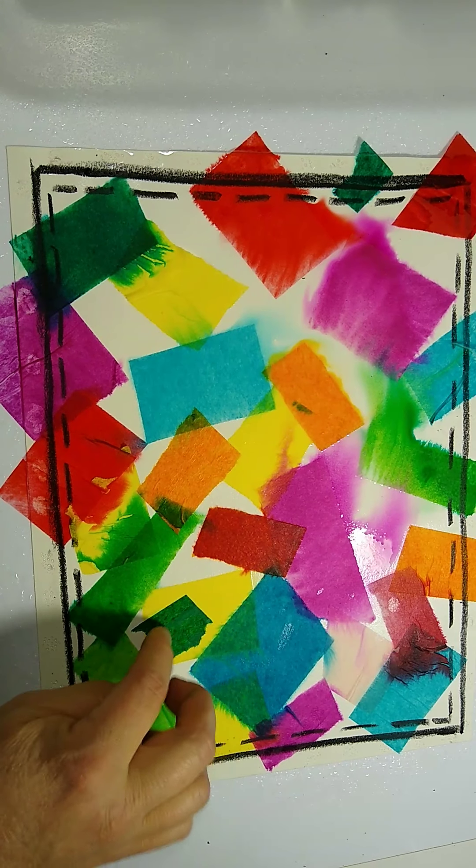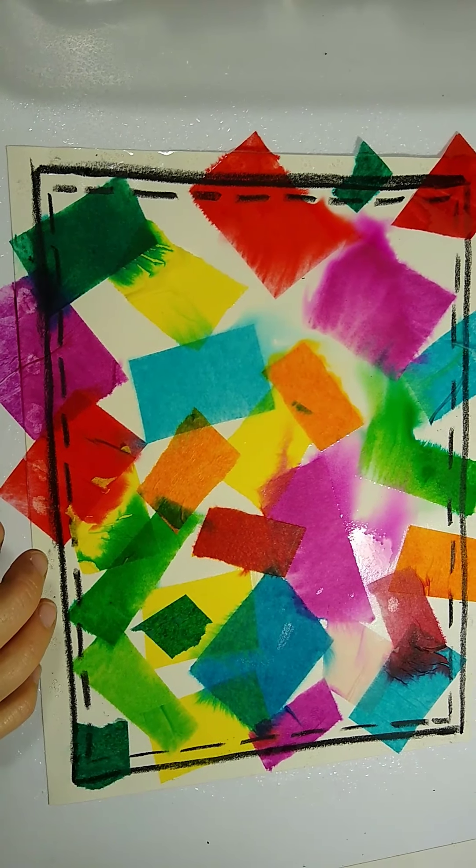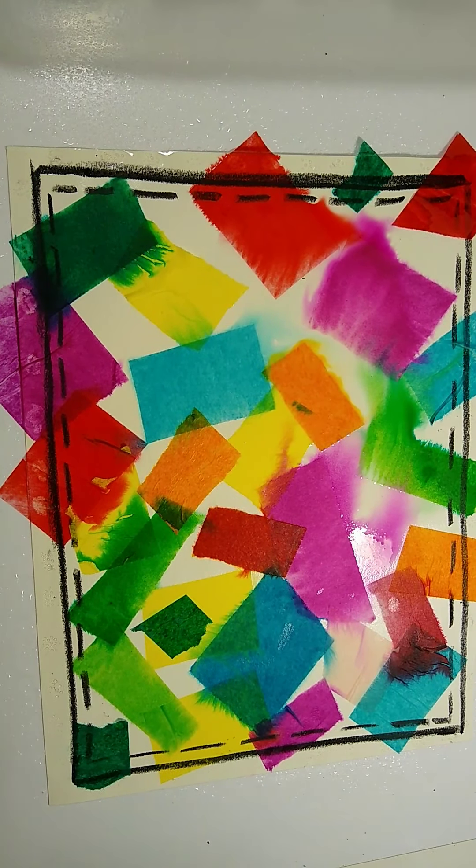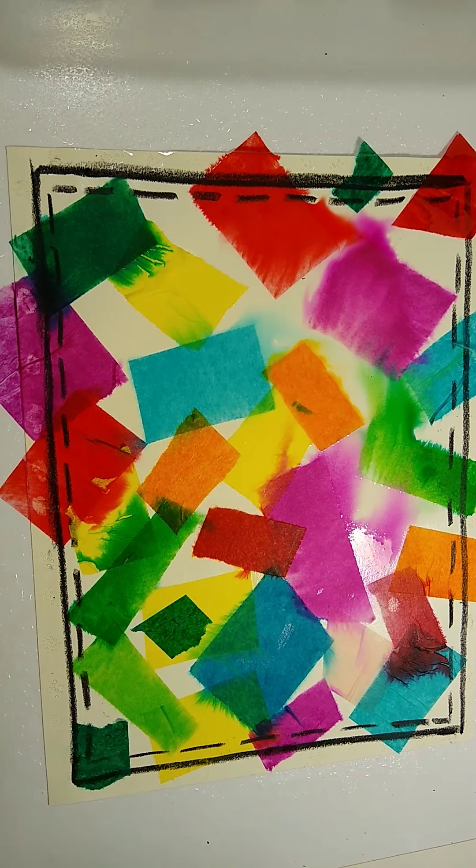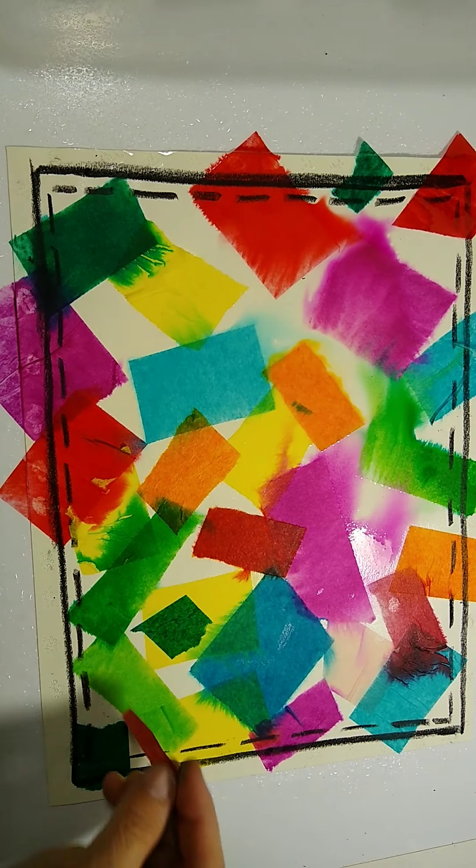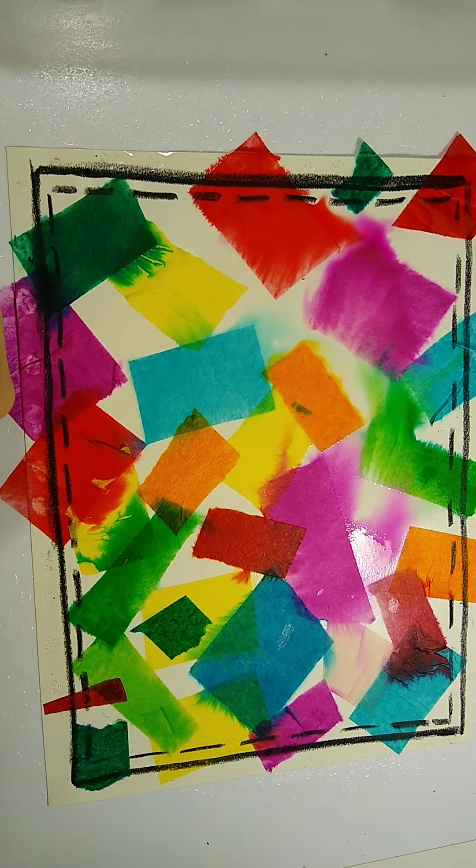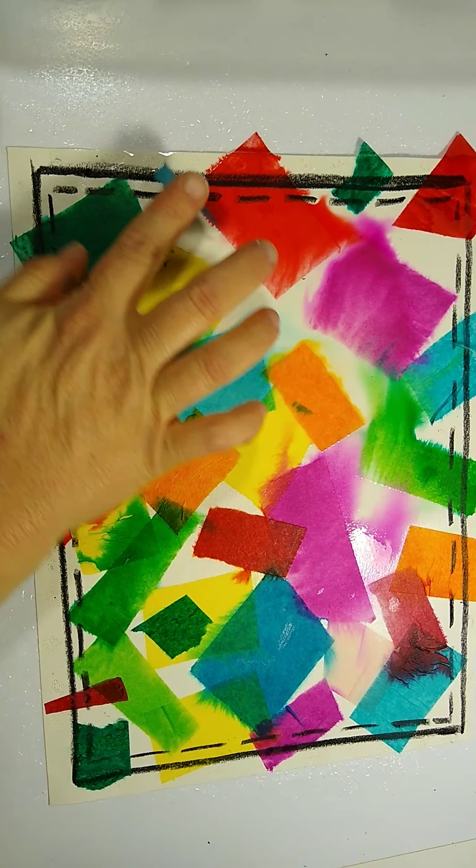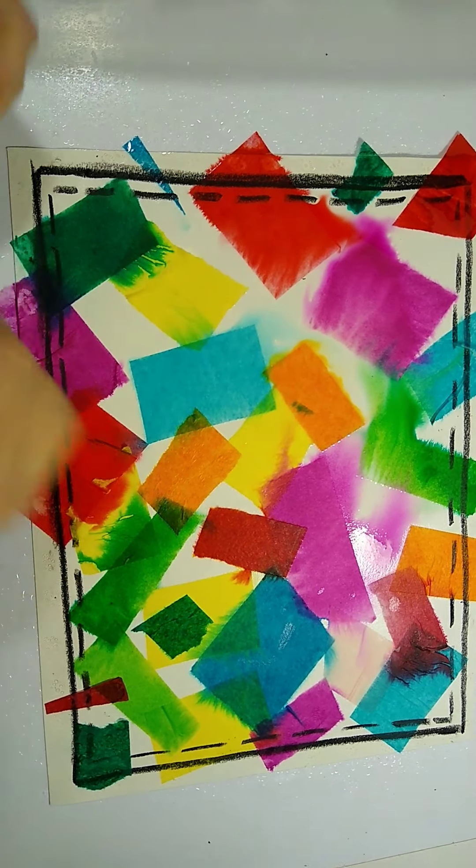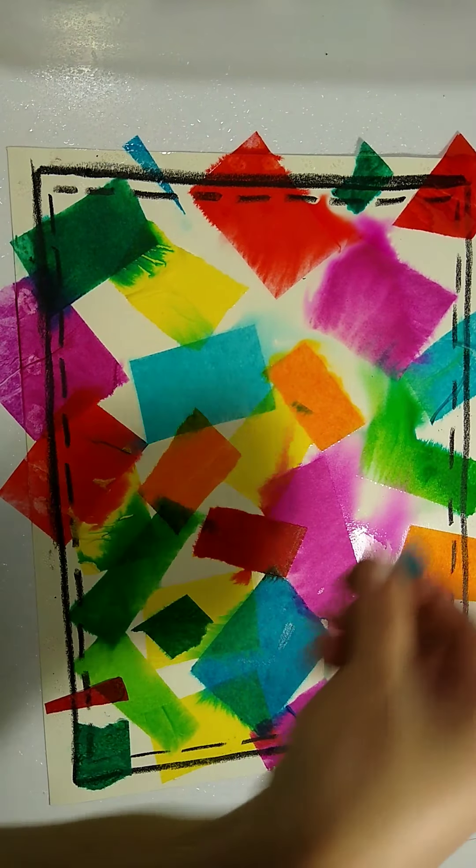And if you stick colors near each other that are analogous, next to each other on the color wheel, it can be kind of fun to see what happens. So like putting, let's see here, I've got some little tiny pieces I thought I might kind of throw in here for interest.